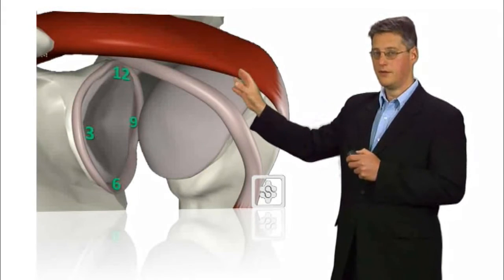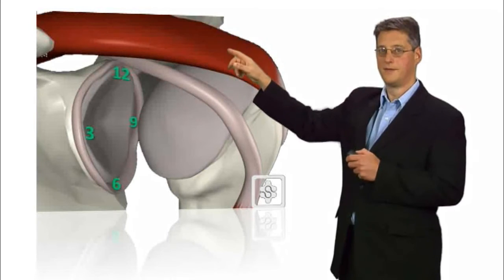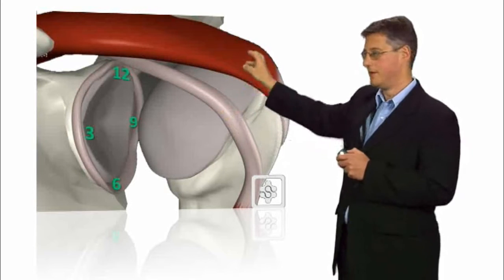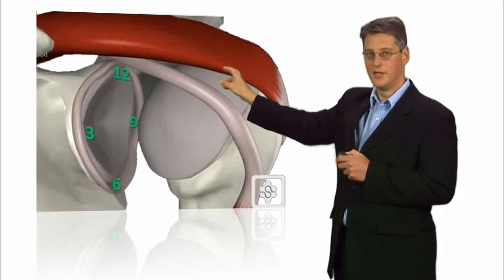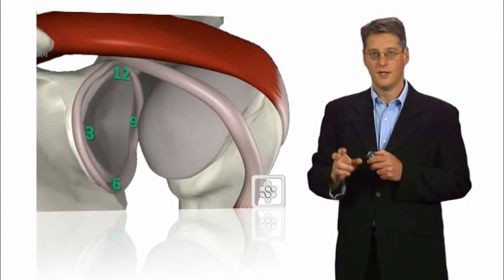If we look at the labrum itself you can see it's like a clock face. At the top 12 o'clock, at the front 3, bottom 6 o'clock and at the back 9 o'clock positions. This is how we describe the different types of tears of the shoulder.